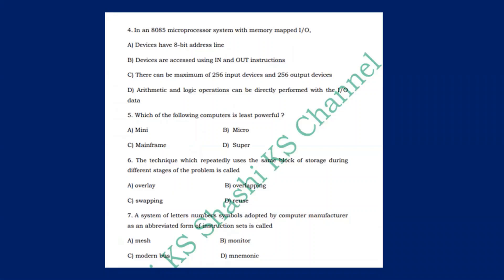Next question: in an 8085 microprocessor system with memory-mapped input/output, devices have a 16-bit address line. In the 8085 microprocessor there are two types of I/O: memory-mapped input/output and I/O-mapped input/output. In I/O-mapped, devices are accessed using IN and OUT instructions. In memory-mapped I/O, load and store instructions are used. There can be a maximum of 256 input devices in I/O-mapped mode. The right answer is option D.